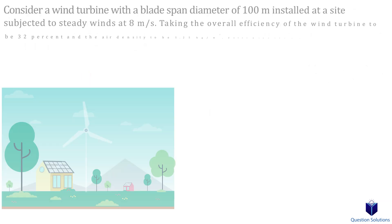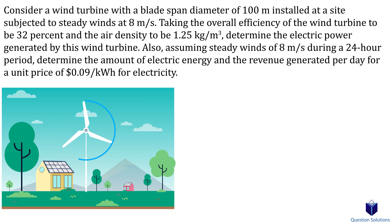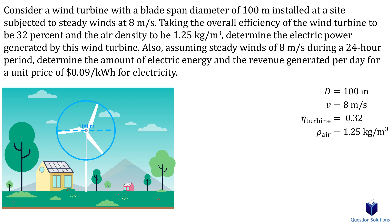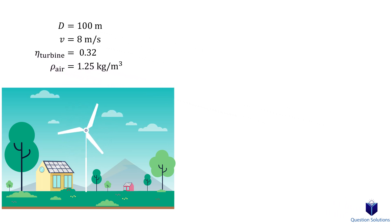In this problem, we have a wind turbine with a diameter of 100 meters and a steady wind speed of 8 meters per second. The wind turbine has an efficiency of 32%, and we need to find the electric power generated as well as the energy and revenue for a 24-hour period. The density of air is 1.25 kilograms per cubic meter. Our first goal is to find the maximum potential work generated — the maximum possible electricity from the wind — and then use the efficiency percentage to find actual electric power generation.